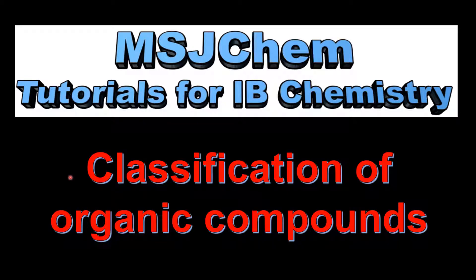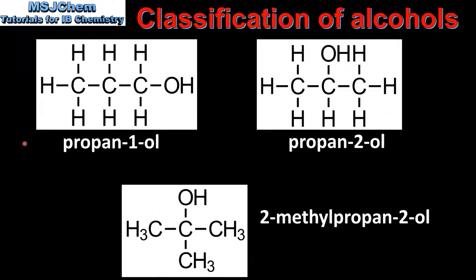This is MSJChem. In this video I'll be looking at the classification of organic compounds. We'll start the video by looking at the classification of the alcohols. Here we can see the structures of three alcohols. On the left we have propan-1-ol and on the right we have propan-2-ol. At the bottom of the screen we have 2-methyl-propan-2-ol.